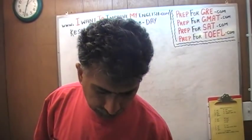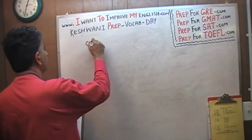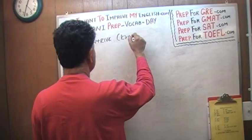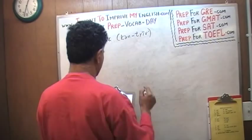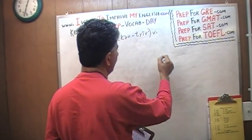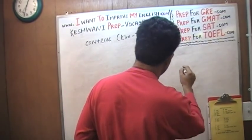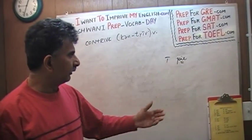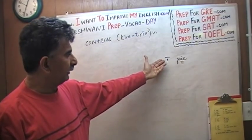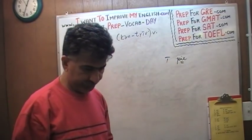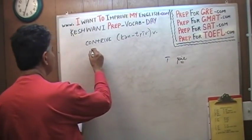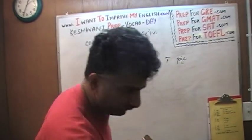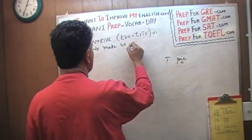The very first word that I want to cover today is 'contrive.' Notice the eye with a line on top of it — you will find it down here under PI as an example. The eye with a line on it is the same sound as in PI. To contrive means to make something up, to make something up artificially.